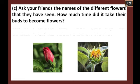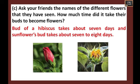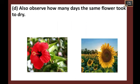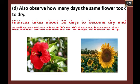Ask your friends the names of the different flowers they have seen and how long their buds took to become flowers. The bud of a hibiscus takes seven days, whereas a sunflower bud takes about seven to eight days. Also observe how many days the same flower takes to dry. Hibiscus takes 30 days whereas sunflower takes 30 to 40 days to dry.